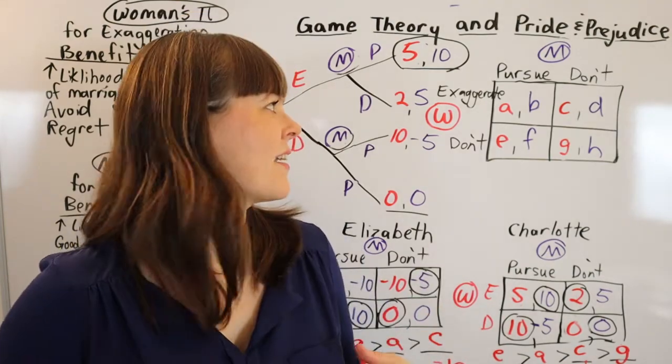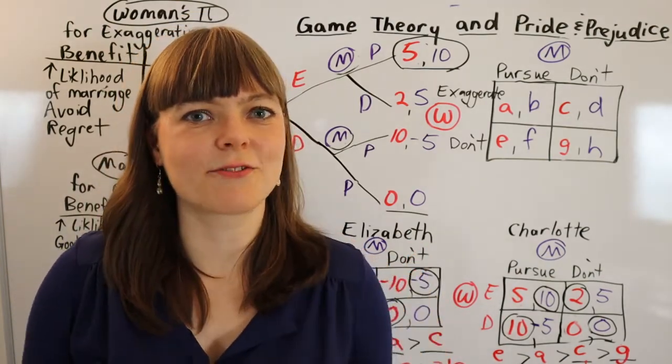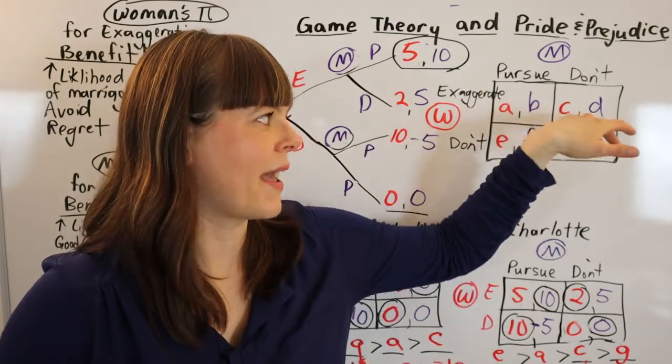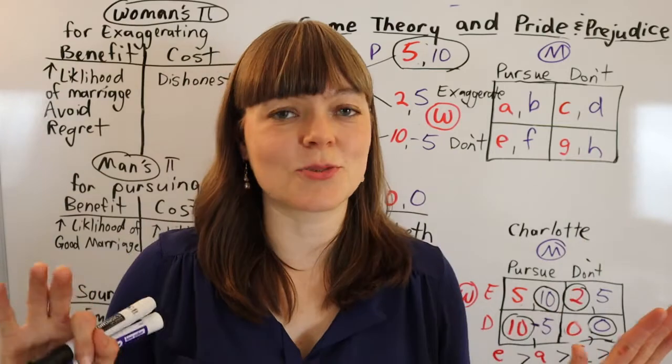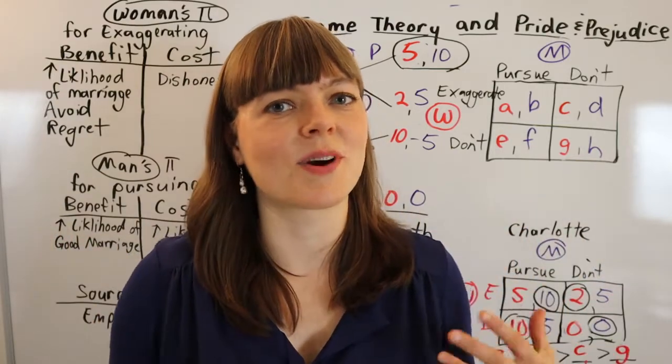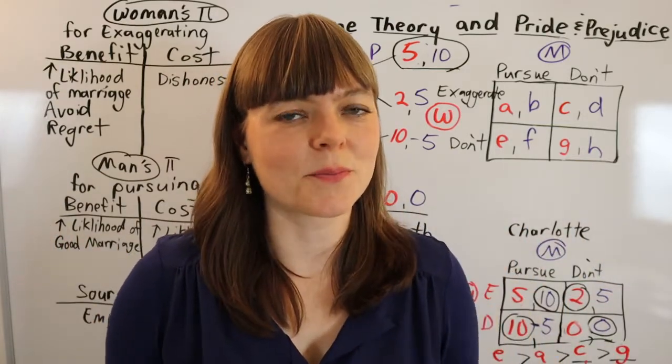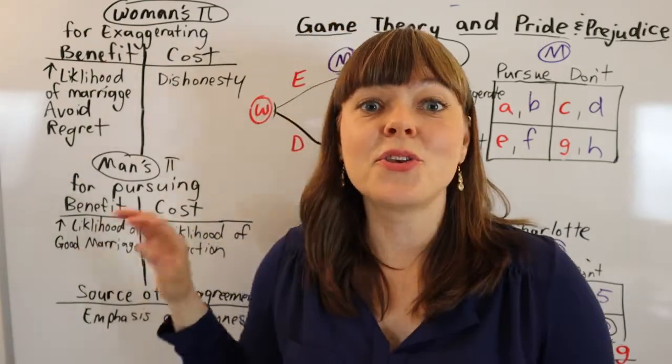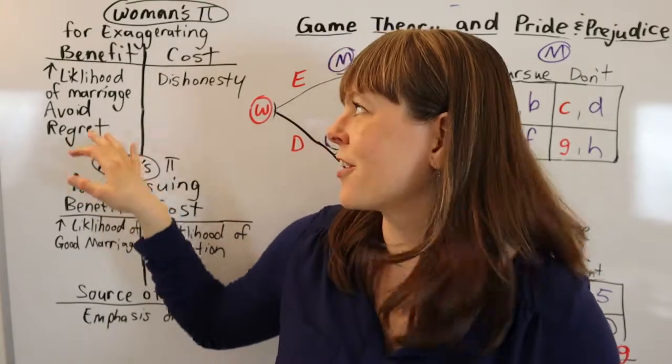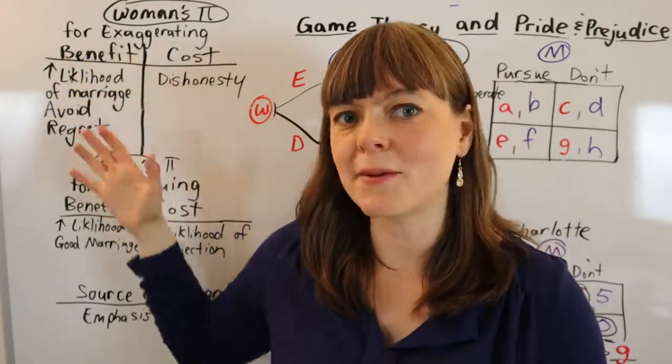I think that's enough for today. I hope this has given you a sense for how do you fill out the payoffs in a matrix, if you're trying to model a strategic situation where you disagree with someone about the right thing to do. And I will say, if you're actually having a disagreement with someone, you are probably going to spend a lot of time over here filling out this benefit and cost table.